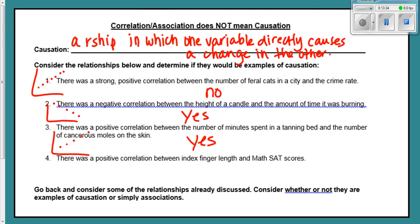Number four, there is a positive correlation between the index finger length and the math SAT scores. So again, there is a relationship there, but do we think that your finger length determines your math SAT score? Do we think that that causes your math SAT score to go up? The answer there would be no. It's crazy and a complete coincidence that those are as related as they are, but one doesn't cause the other. There might be some other factor there that we're not considering.